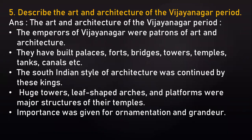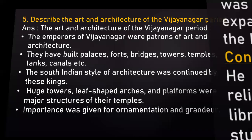Next question: Describe the art and architecture of the Vijayanagara period. Answer: The emperors of Vijayanagara were patrons of art and architecture. They built palaces, forts, bridges, towers, temples, tanks, canals, etc. The South Indian style of architecture was continued by these kings. Huge towers, leaf-shaped arches and platforms were major structural features of the temples. Importance was given to ornamentation and grandeur.